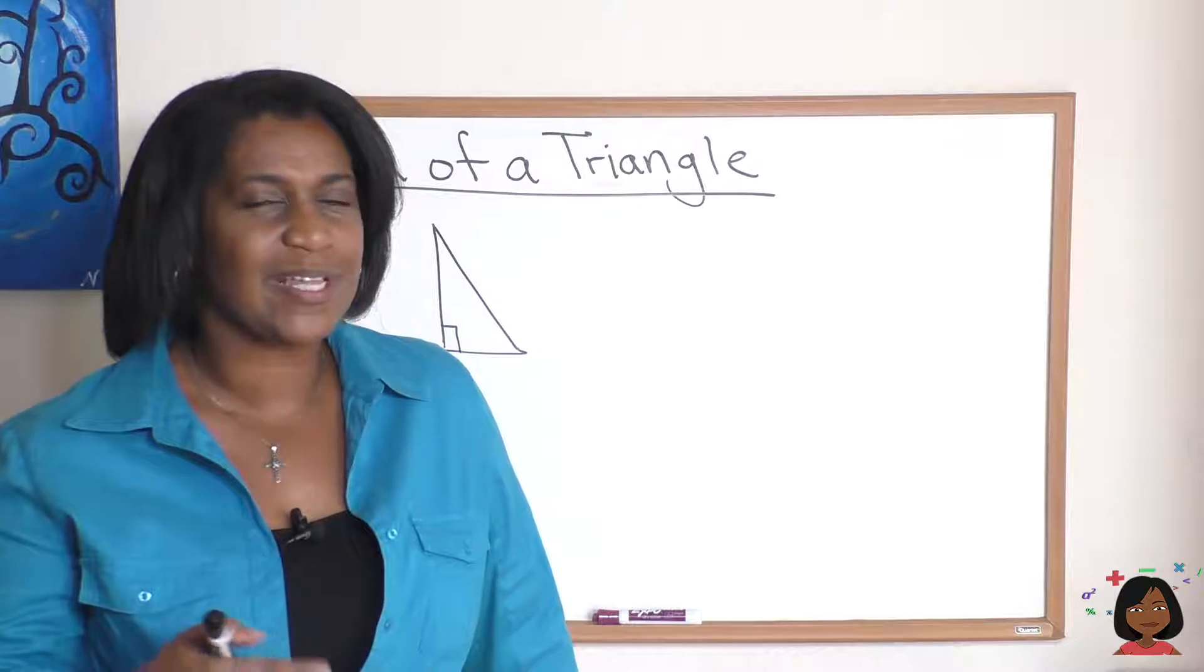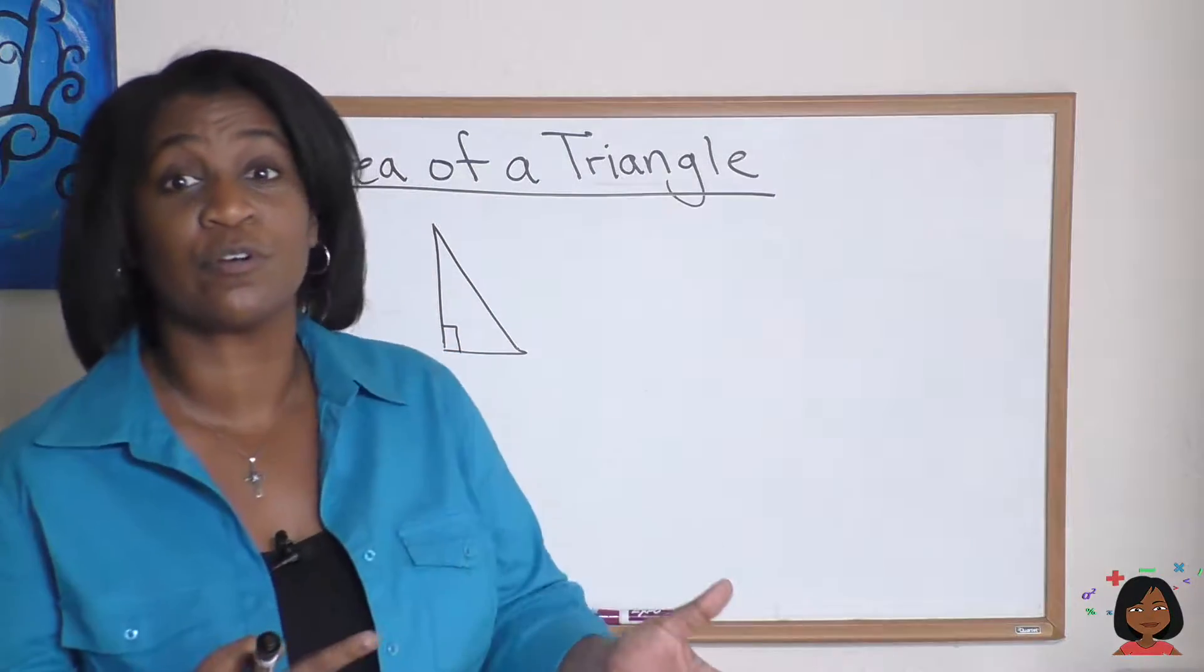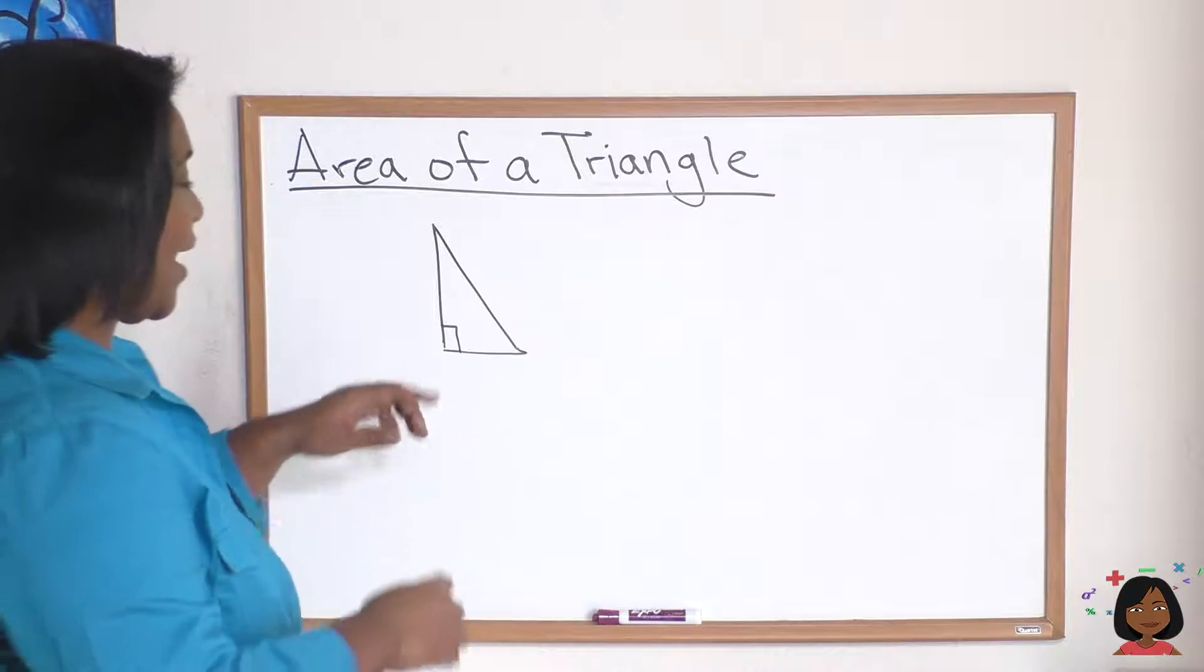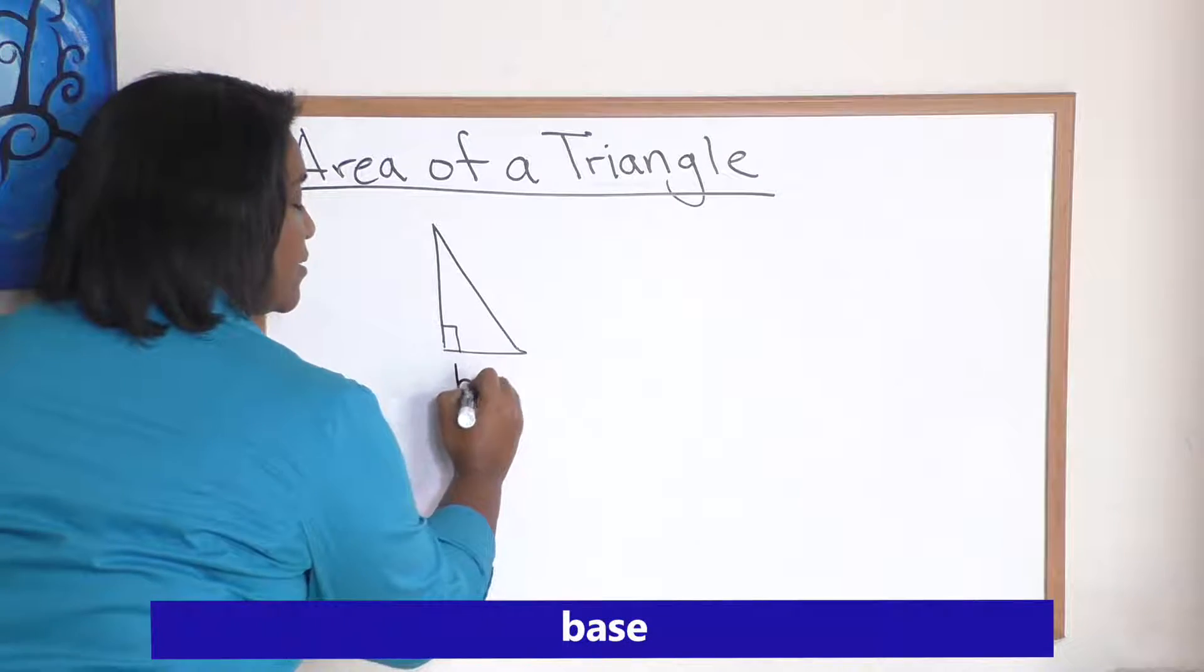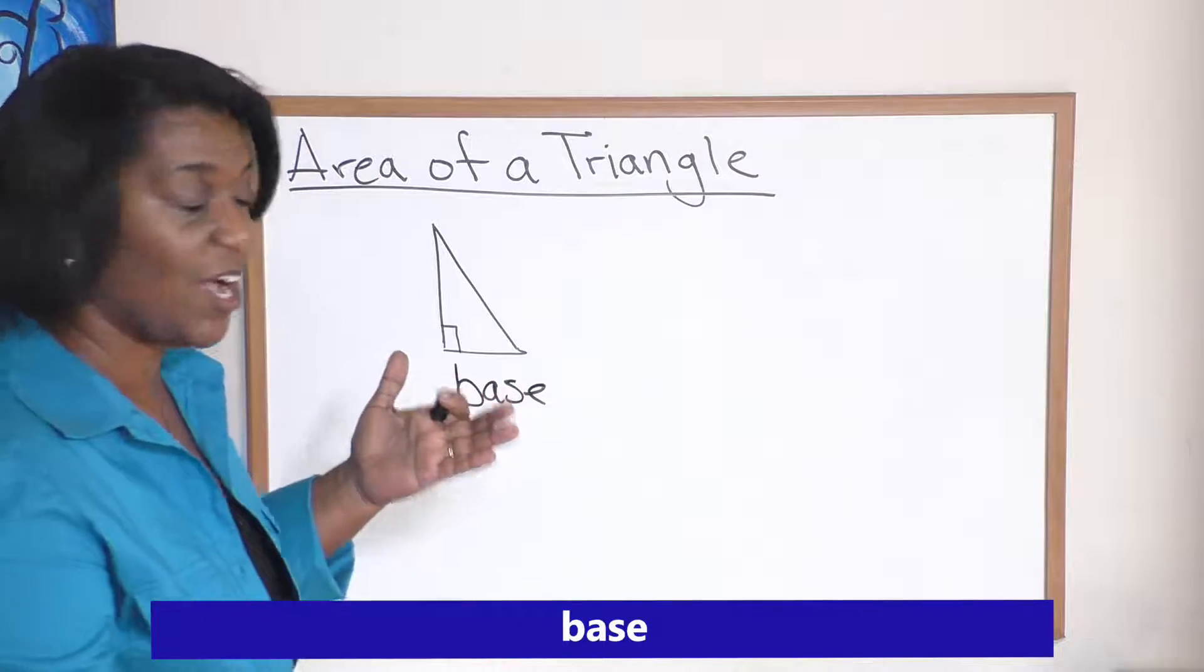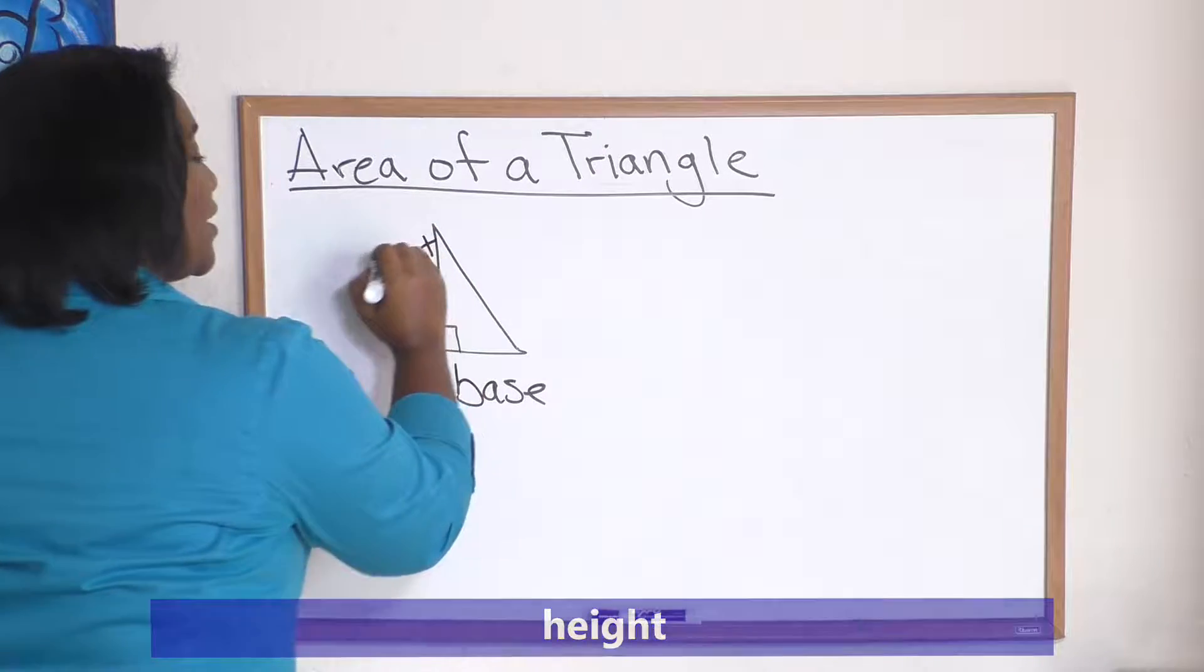So let's see how that might change. First, the one thing that's different is we use some different terms. Instead of length and width, when it comes to a triangle we actually use the terms base and height. Base is that bottom that your triangle is sitting on, and the height.